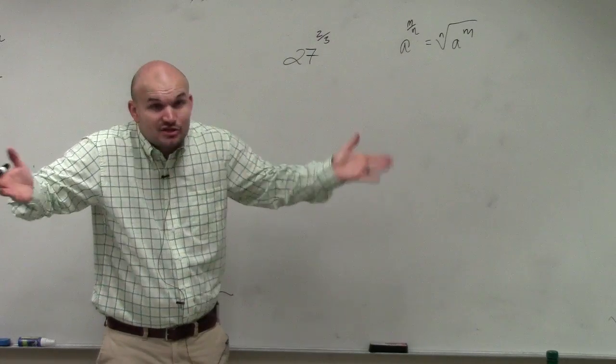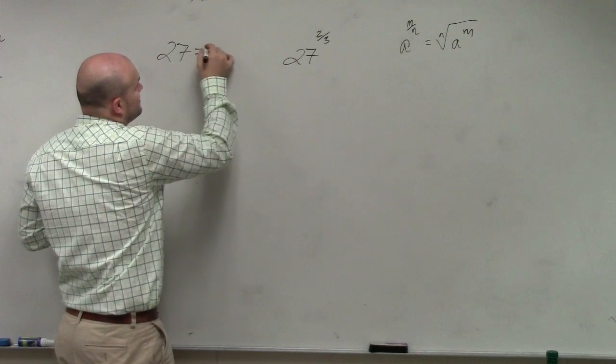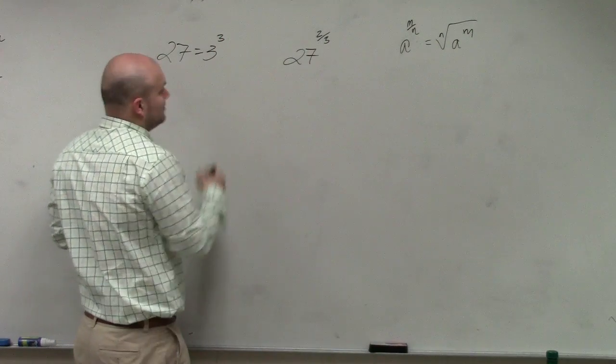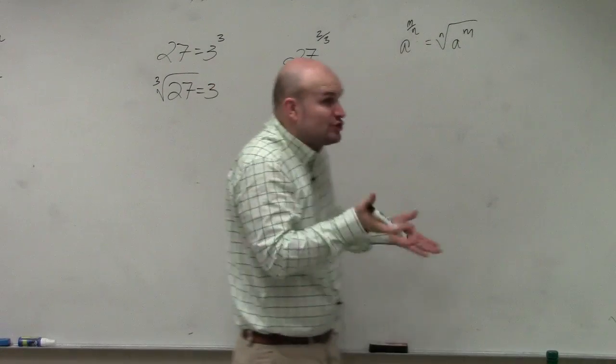The cube root of 3. Yeah, it's a cube number, right? 27 is 3 cubed. Or you could say the cube root of 27 is equal to 3. That's something that's shown up.